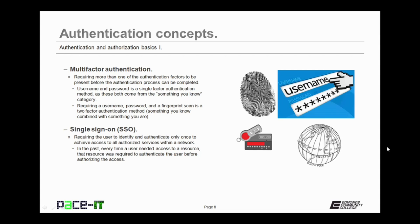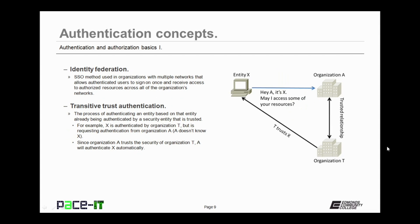In the past, every time a user needed to access a different resource, that resource was required to authenticate the user before authorizing the access. This took time and did create some network congestion. Single sign-on will reduce the network traffic that is required and will also speed up the process. Identity federation is an SSO method used in organizations with multiple networks that allow authenticated users to sign on once and receive access to authorized resources across all of the organization's networks.